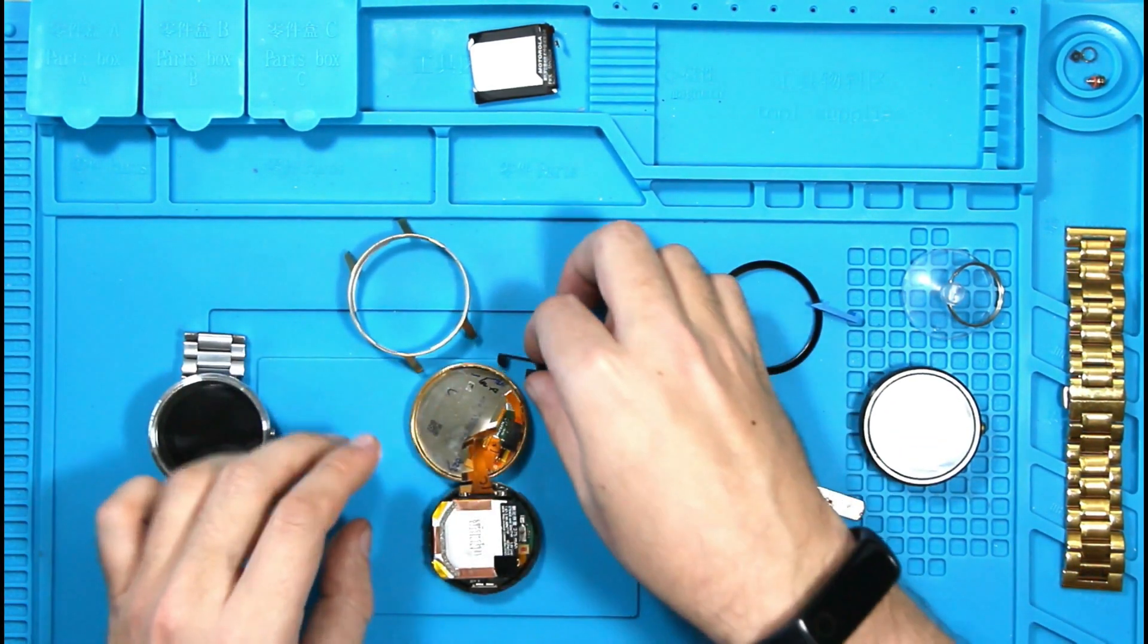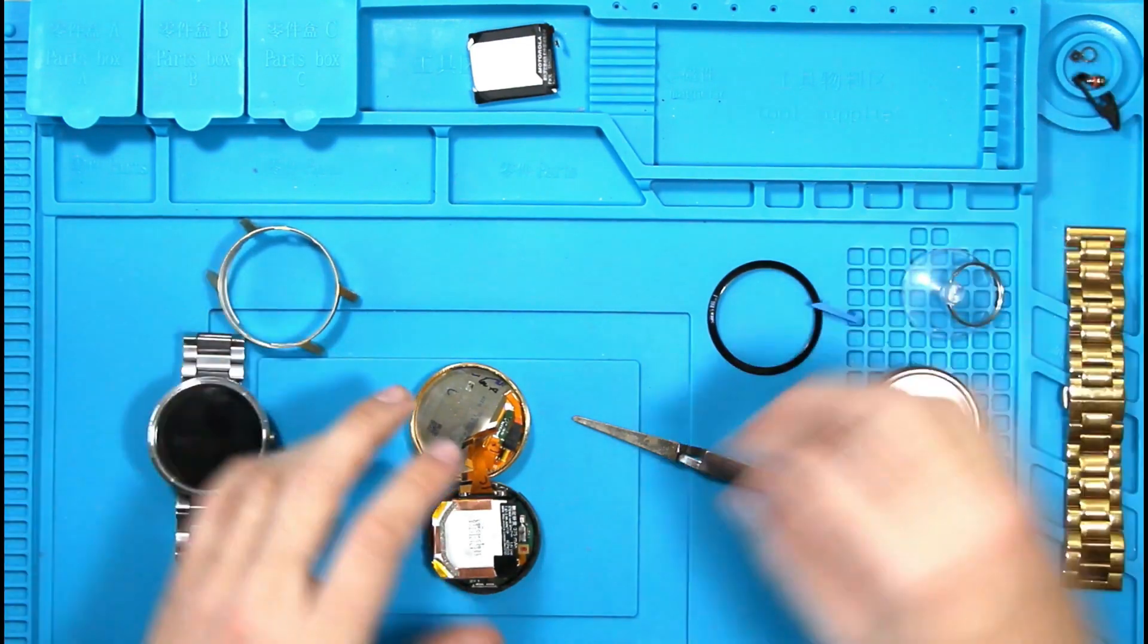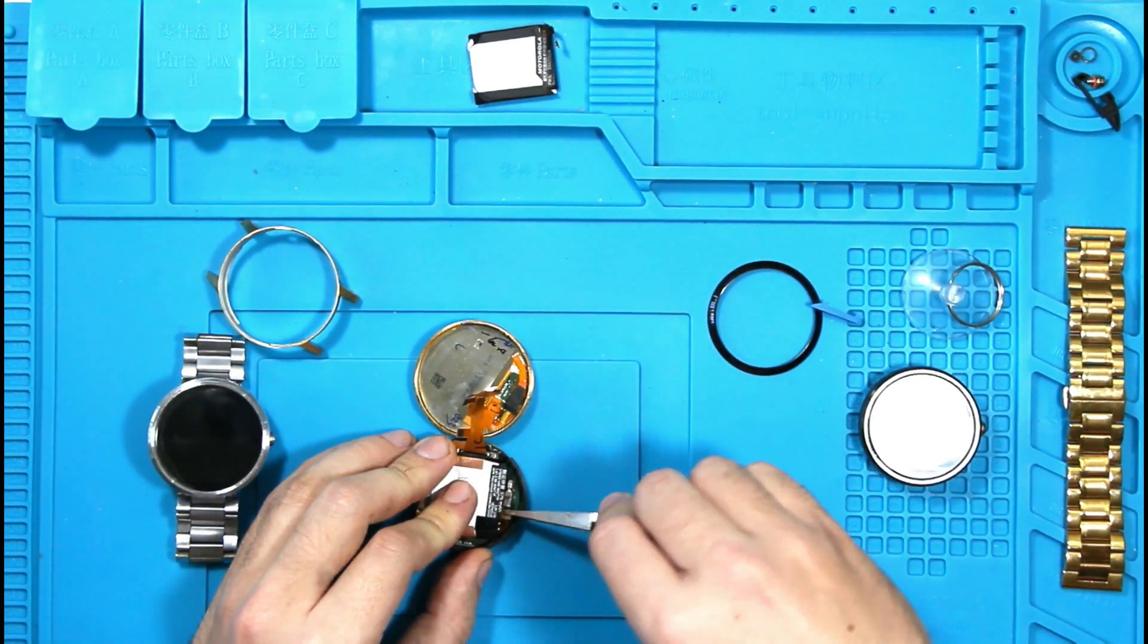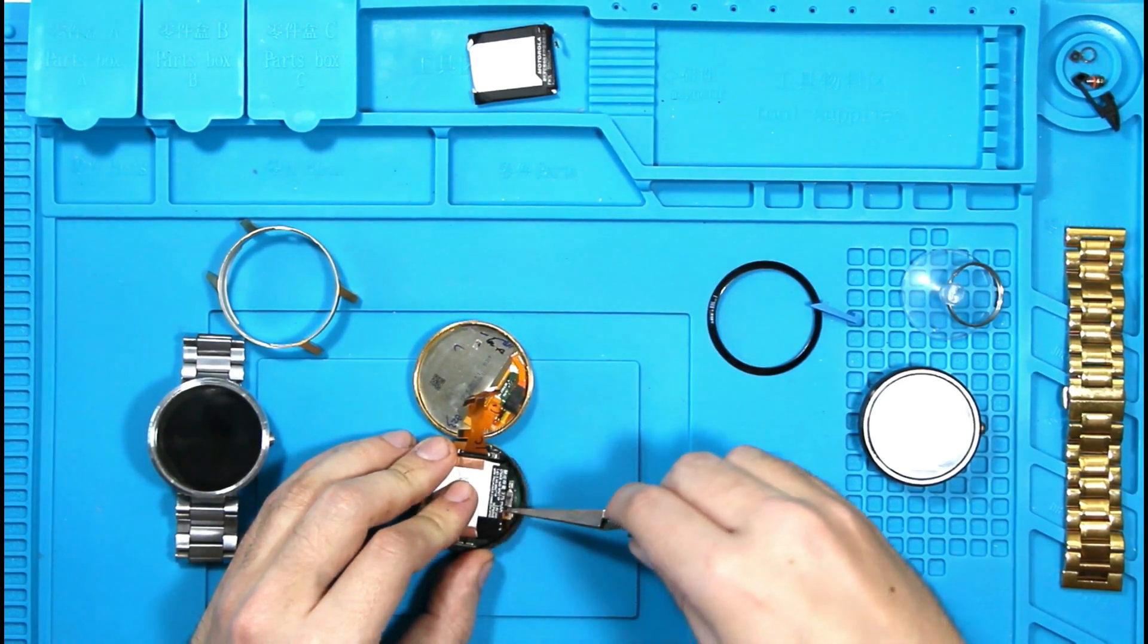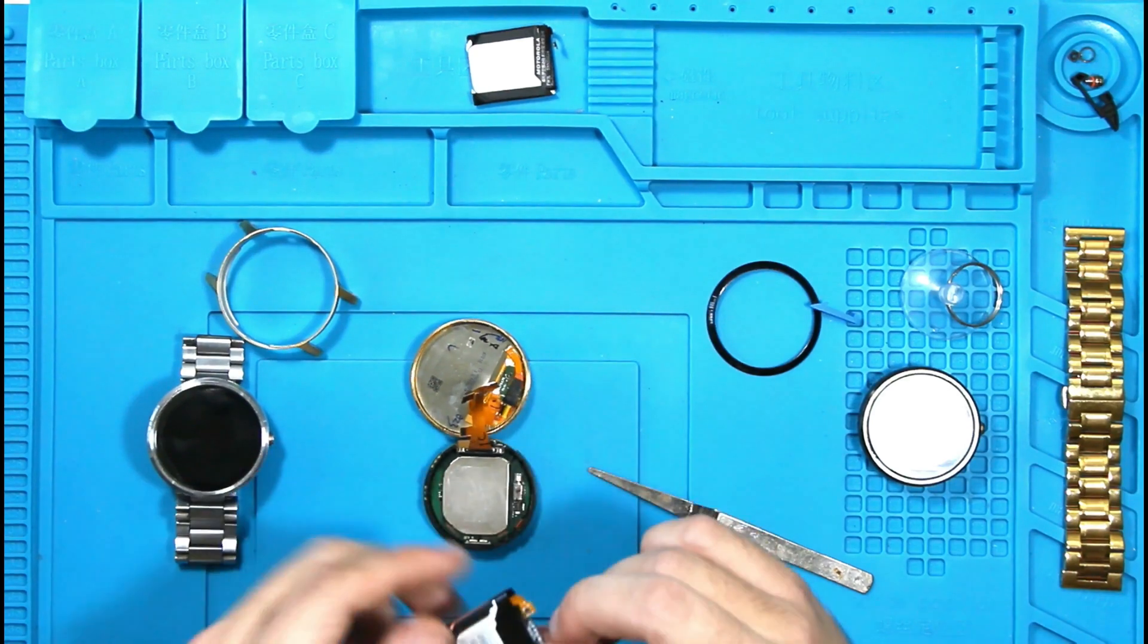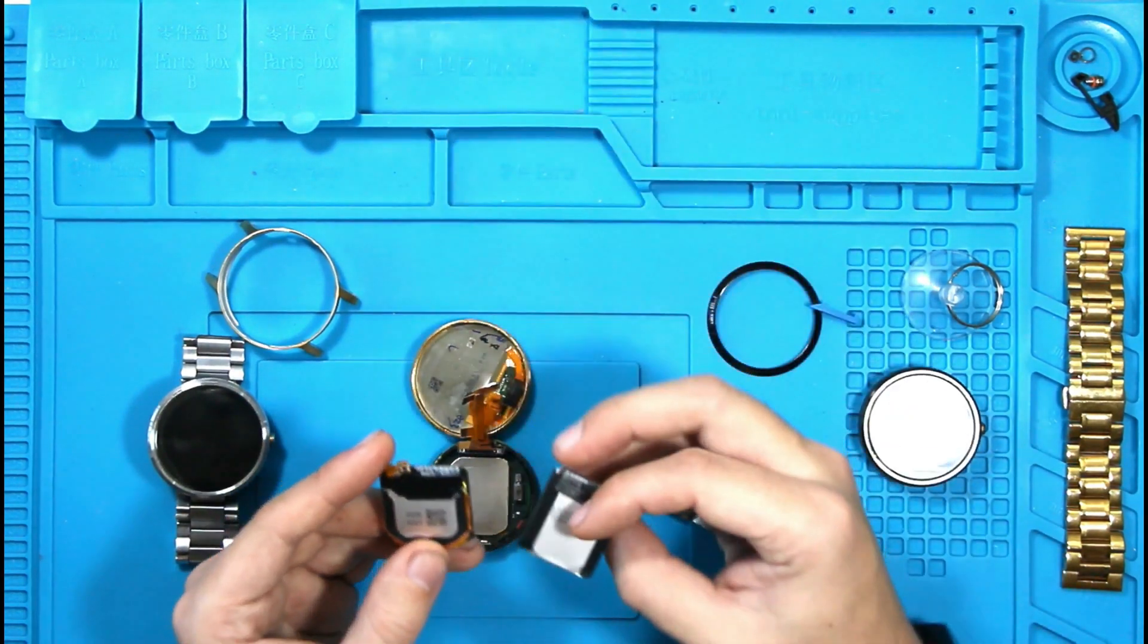And here is the final battery connector. So again, be very careful with this flat cable. So let's see if we can remove this without breaking it. And here is the battery, the old battery. Let's see if the new battery looks the same.